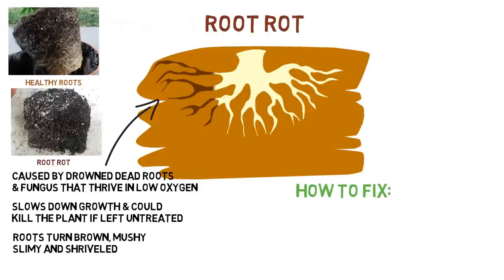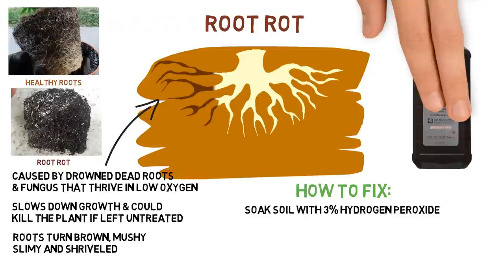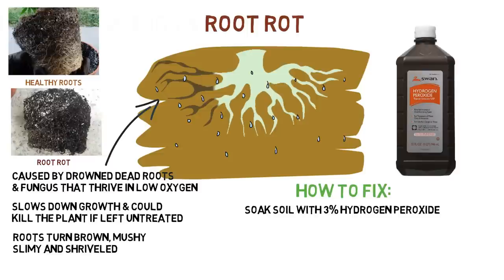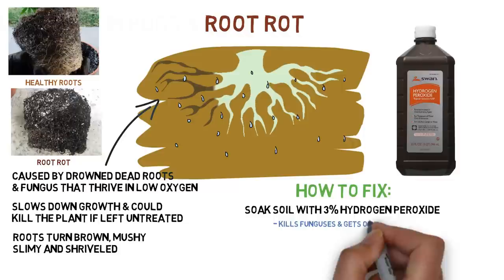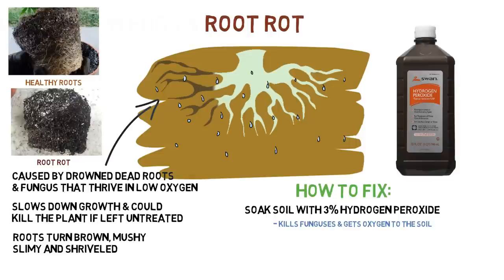One treatment for root rot is to soak the soil with 3% hydrogen peroxide. It will kill off the fungus causing root rot, and when it breaks down, it gets more oxygen into the soil. Wait for the hydrogen peroxide to completely dry down to the top 2 to 3 inches before watering again. Note that this kills off everything in the soil — good and bad — so if you're using organic soil, it will destroy beneficial microbes. Only use this as a last resort.